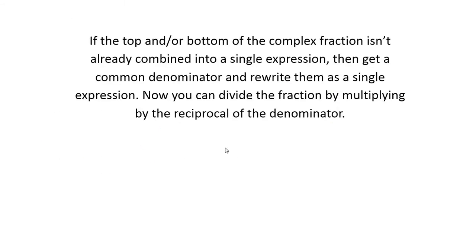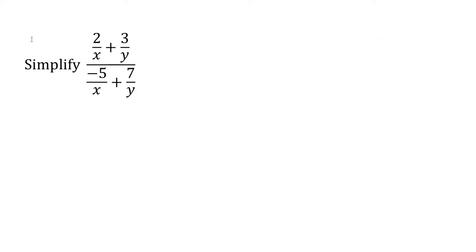What if it gets more complicated? Maybe the top or bottom isn't already combined. Then we'll get a common denominator and rewrite them as a single expression—that's where adding and subtracting rational expressions from the first part of this lesson comes in. Once you make it look like that, we can divide by multiplying by the reciprocal. Let me show you an example.